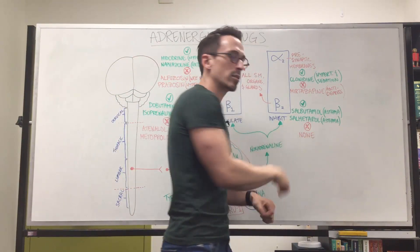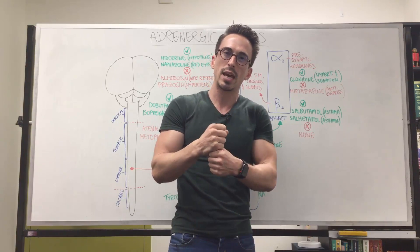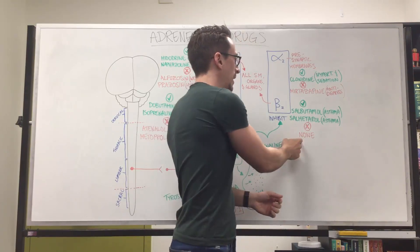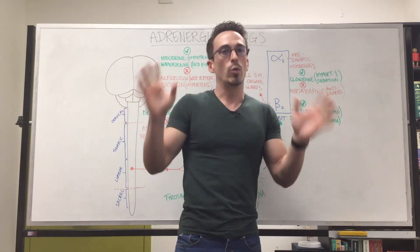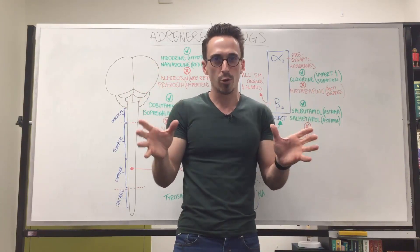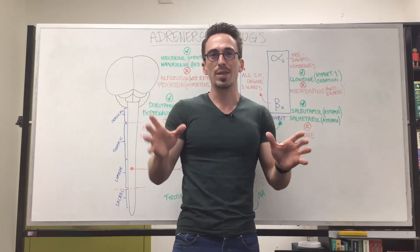Now, what about the antagonists of beta-2? Do we ever want to constrict the airways? No, not really. So we don't really have any drugs for that. So it wasn't very quick, but this is a run through of drugs of the sympathetic nervous system.